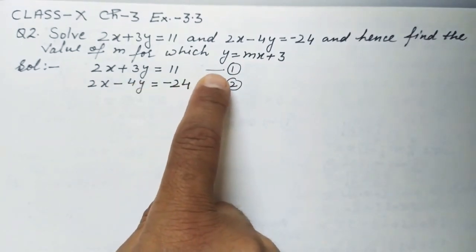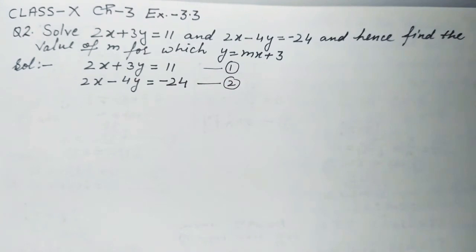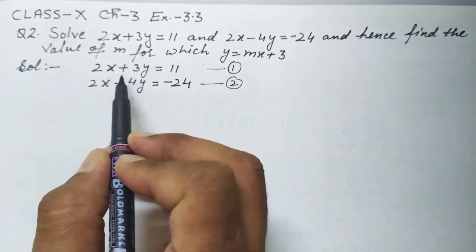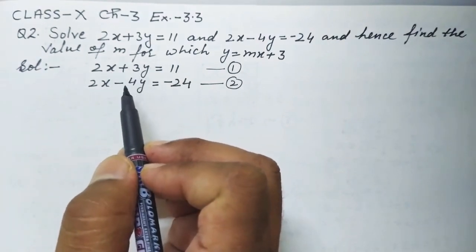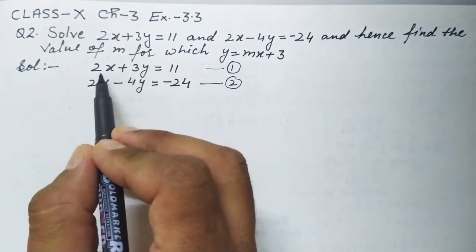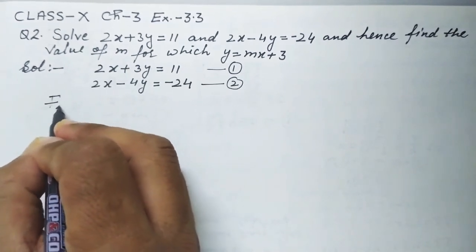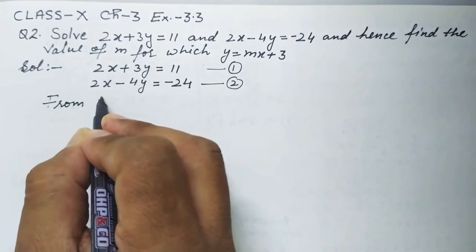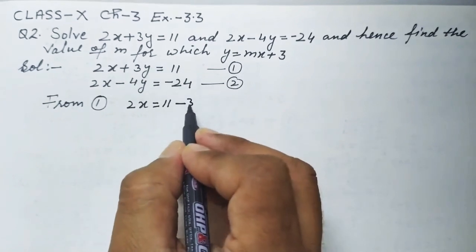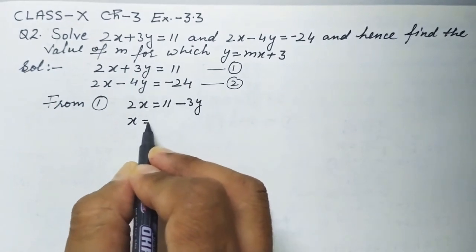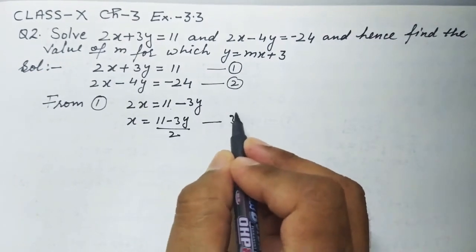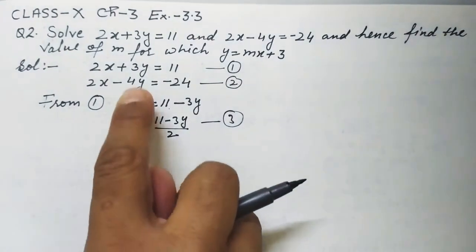I have given the names of these two equations as 1 and 2. In the substitution method, we take out the value of either x or y from one equation and fill it into the other. From equation 1, I am taking the value of x. So from equation 1, I get 2x is equal to 11 minus 3y, which gives x is equal to 11 minus 3y over 2. Let's call this equation 3.